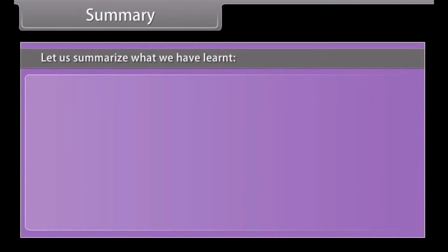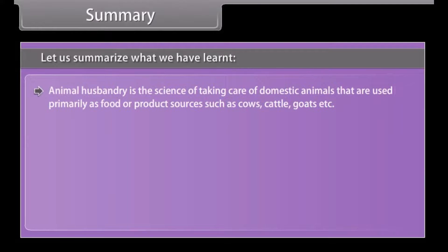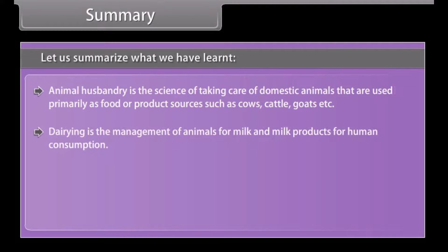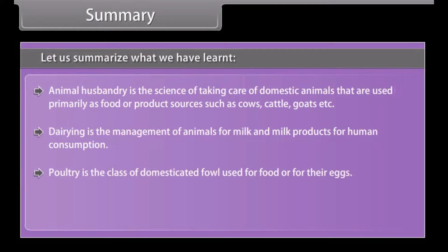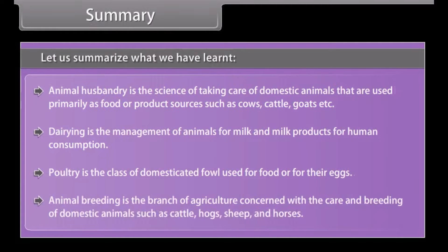Summary: animal husbandry is the science of taking care of domestic animals that are used primarily as food or product sources such as cows, cattle, goats, etc. Dairy farming is the management of animals for milk and milk products for human consumption. Poultry is the class of domesticated fowl used for food or for their eggs. Animal breeding is the branch of agriculture concerned with the care and breeding of domestic animals such as cattle, hogs, sheep and horses.